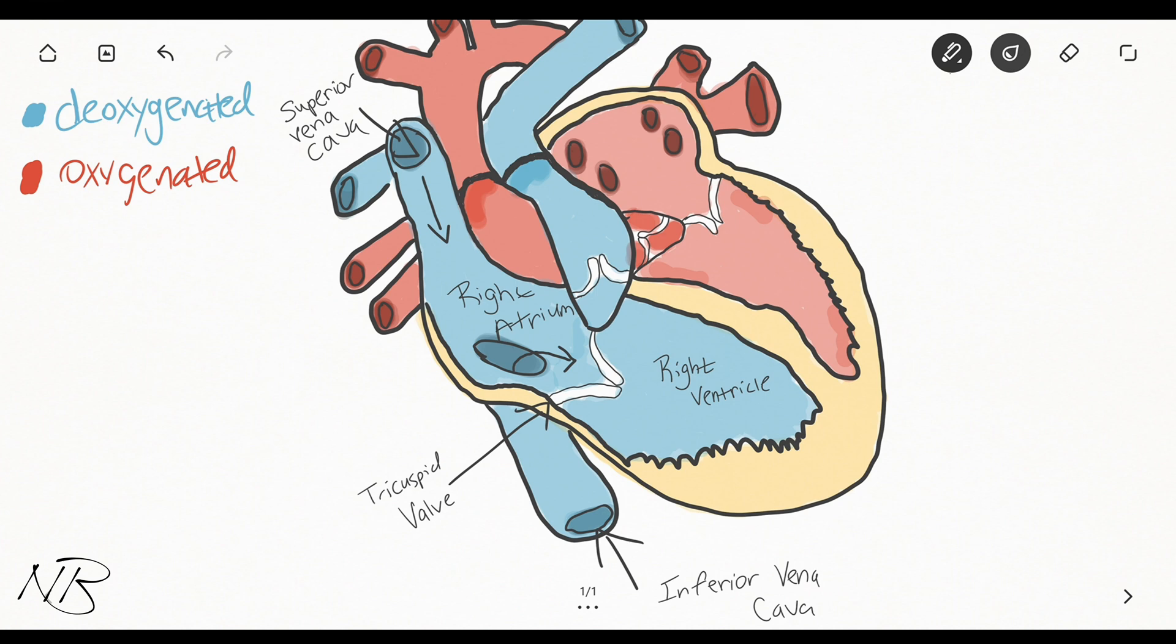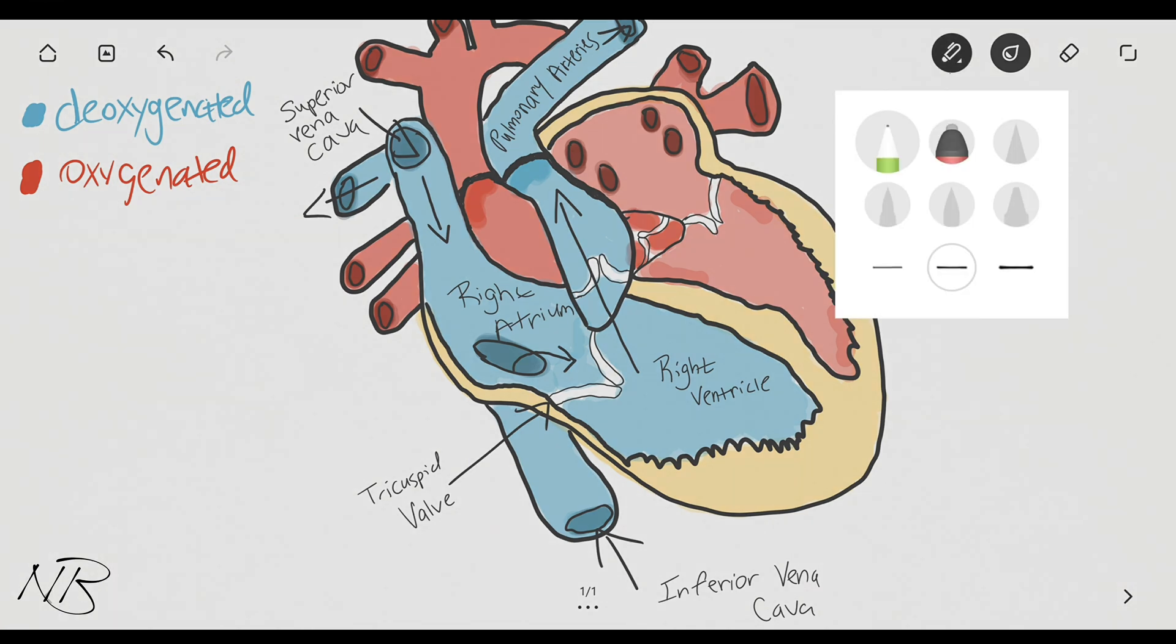Blood then gets ejected during systole from the right ventricle and it travels up into the pulmonary arteries. And the blood is then sent to the lungs to be oxygenated. But whenever the blood passes from the right ventricle up into the pulmonary arteries, again, we can see we are passing through another valve. This time, what valve are we passing through? The pulmonic semilunar valve.